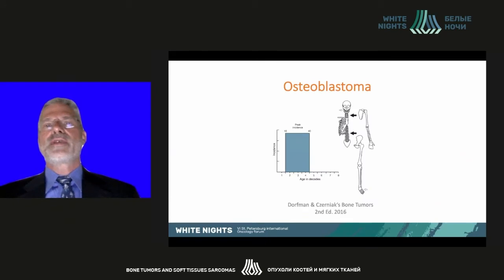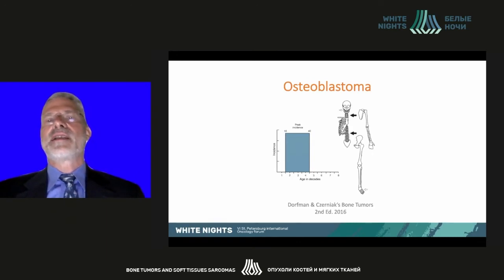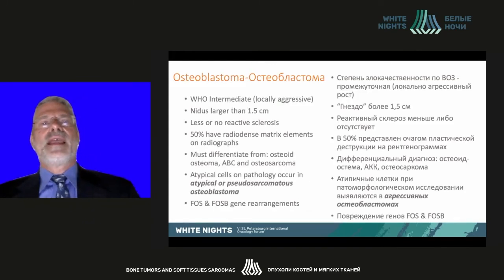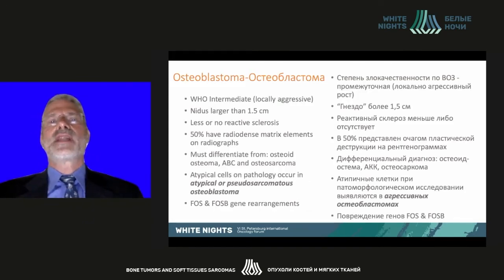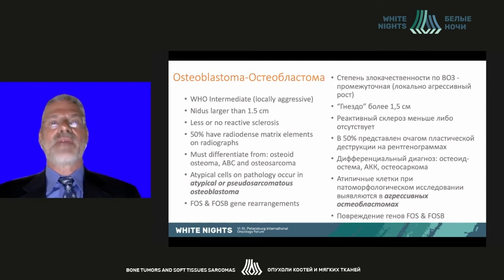For the first lesion, osteoblastoma, it's a lesion we're all familiar with and has a predominance in the jaw, cervical spine, thoracic and lumbar spine, as well as in the feet, with an age predilection of 15 to 45. The World Health Organization classifies this lesion as locally aggressive, with nidus larger than 1.5 centimeters, differentiating it from an osteoid osteoma.